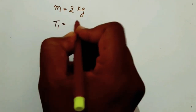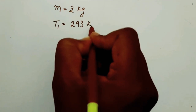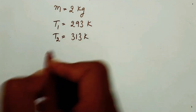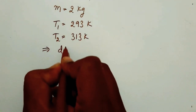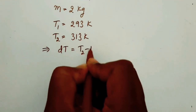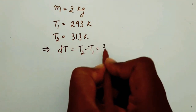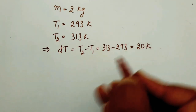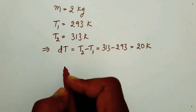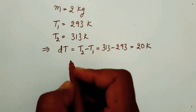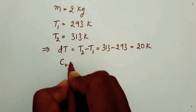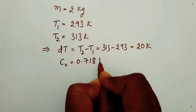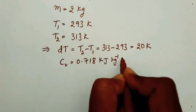T1 is equal to 293 Kelvin and T2 is equal to 313 Kelvin. So the temperature difference, delta T, is equal to T2 minus T1, that is 313 minus 293, which equals 20 Kelvin. The specific heat of air at constant volume is given.